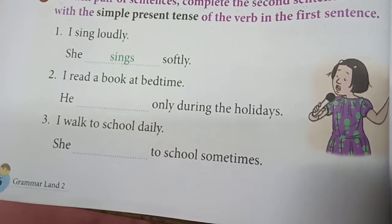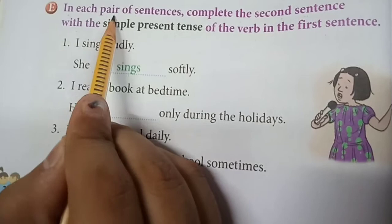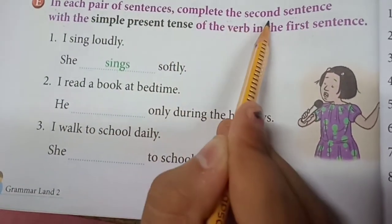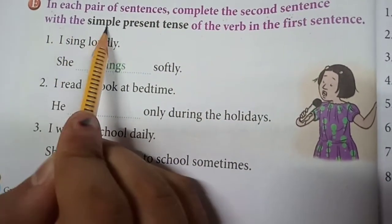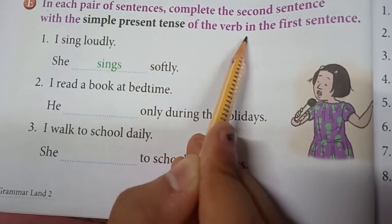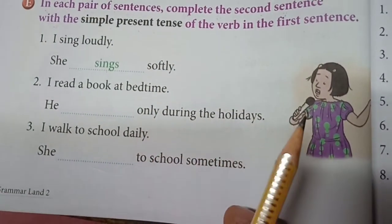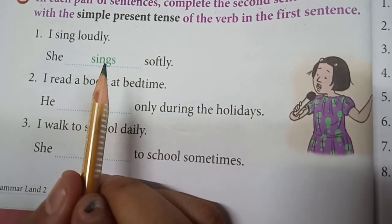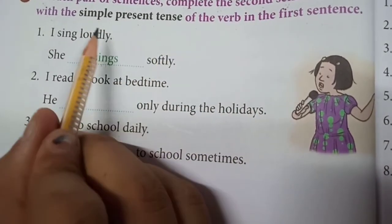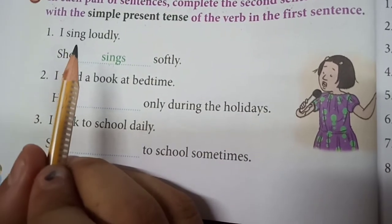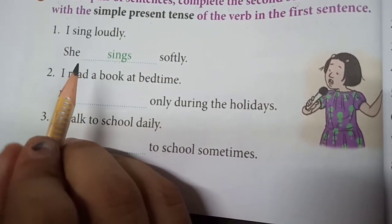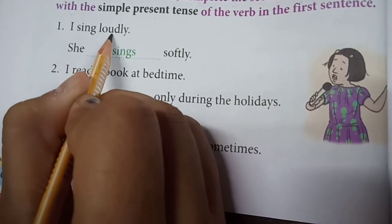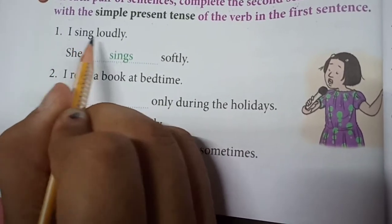Let's move to the exercise. In each pair of sentences, complete the second sentence with the simple present tense verb. Now let's move to the example. 'I sing loudly.'